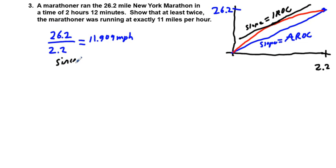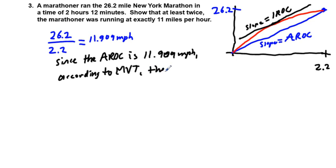Since the average rate of change is 11.909 miles per hour, according to the Mean Value Theorem, the runner had to be going 11.909 miles per hour at least once.